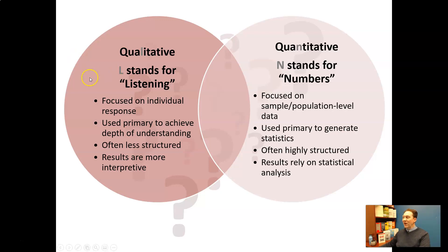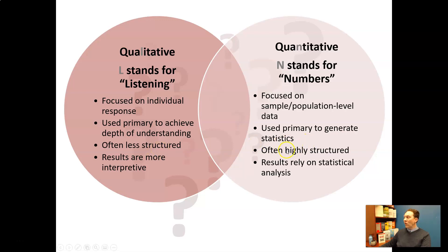A few other differences worth noting: qualitative data tend to be focused on individual responses as opposed to sample or population-level data. We're often looking at using primary research to achieve a depth of understanding rather than to generate descriptive statistics. Qualitative is often less structured — that doesn't necessarily mean less rigorous — but it's easier to pivot and change as you move along, whereas quant tends to be highly structured by necessity.